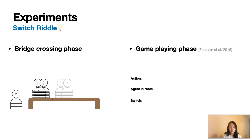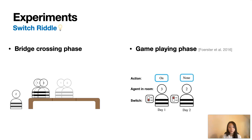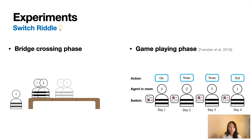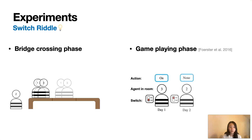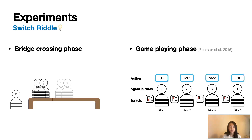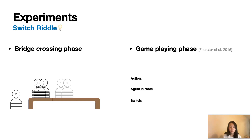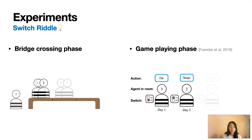During the game-playing phase, each day an agent is sent into a room containing a lightbulb with a toggle switch. The agent will be able to observe the current state of the lightbulb, and if he wishes, he can toggle the lightbulb. He also has the option of announcing that he believes all agents have visited the room at some point in time. If this announcement is true, agents win; they lose otherwise.